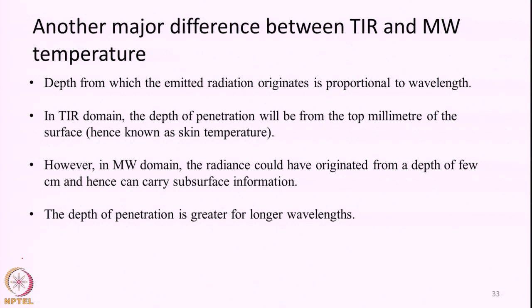This is the major difference in how we think and work in TIR remote sensing versus passive microwave radiometry. The physical concept behind signal emission is the same, but the way we use the data is extremely different. There is also another major difference: in TIR remote sensing the temperature we estimate is called the surface radiometric or 'skin' temperature.